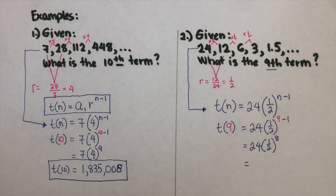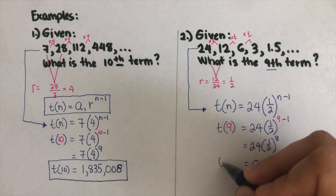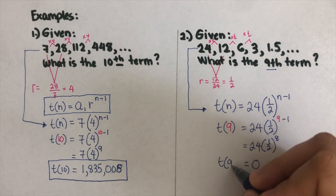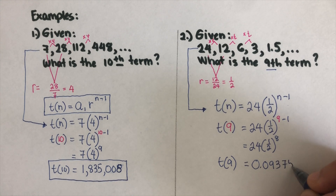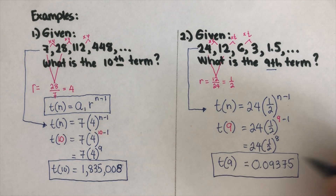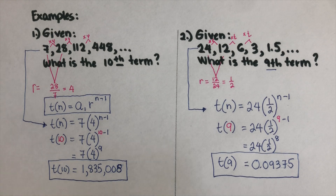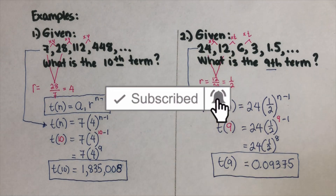Using the calculator, t(9) = 0.09375. That is the 9th term. Please check with your calculator to see how we got these numbers. If you find this video helpful, please like and subscribe for more math videos. See ya!